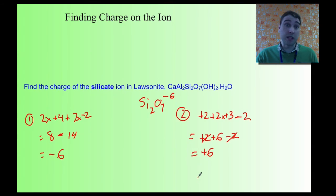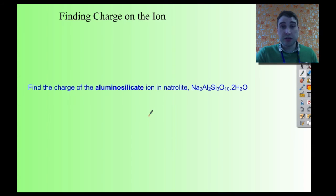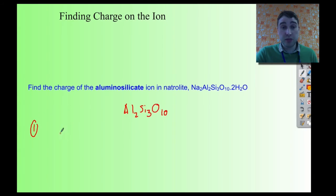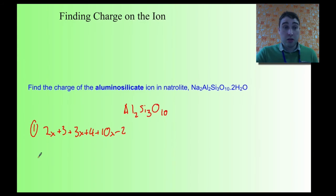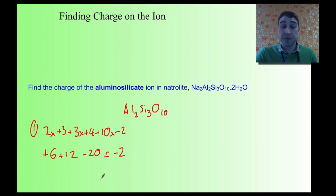Here's another example. We're looking at the aluminosilicate ion in natrolite, so we need to include the aluminium. We get Al2Si3O10 as the aluminosilicate ion. Using the first method: two times the oxidation number of aluminium (plus three), three times the oxidation number of silicon (plus four), and ten times the oxidation number of oxygen (minus two). That gives plus six, plus twelve, minus twenty. Plus six plus twelve is eighteen; eighteen minus twenty is minus two.